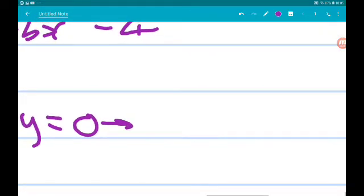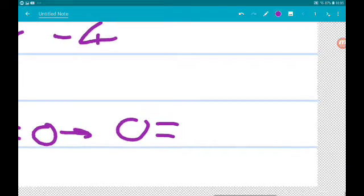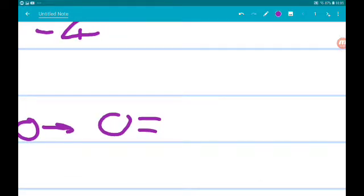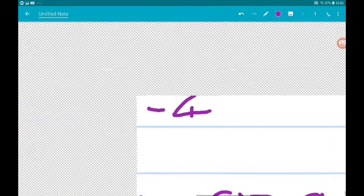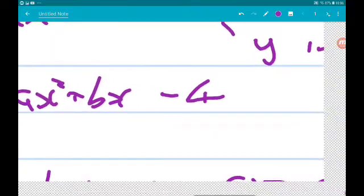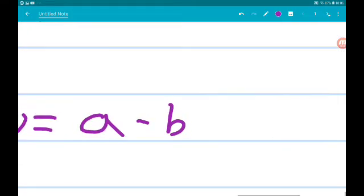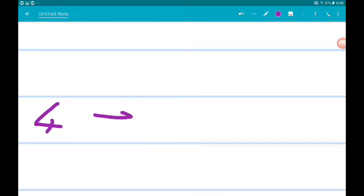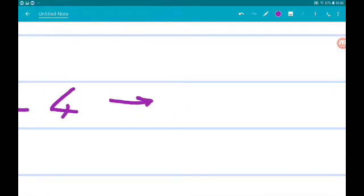Now, that tells us then that 0 equals a times minus 1 squared, which is 1. So, we get a minus b minus 4. That then tells us that a minus b equals 4.